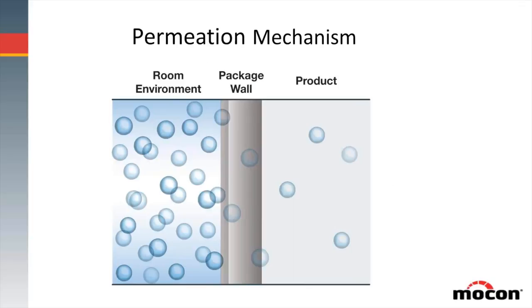The mechanism for permeation is really a three-part step. We've got molecules on one side, a package wall, and an environment around it with a product inside. If we're looking at water vapor coming into a dry product, the humidity in the environment will first reach the package wall, absorb into it, and then desorb out of it into the product. The overall goal is for the permeant — in this case water vapor — to come to equilibrium on both sides. One way we count molecules is by pressure, so a high concentration of molecules is a high partial pressure, and the other side is a low pressure. Within the vocabulary of permeation, we discuss this with partial pressure and driving forces.